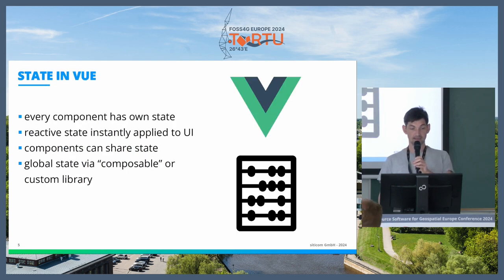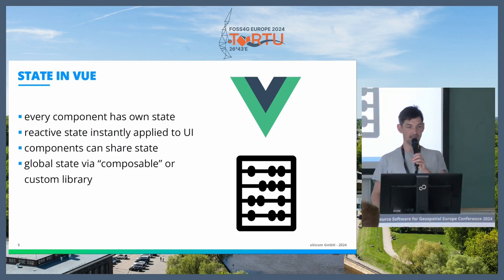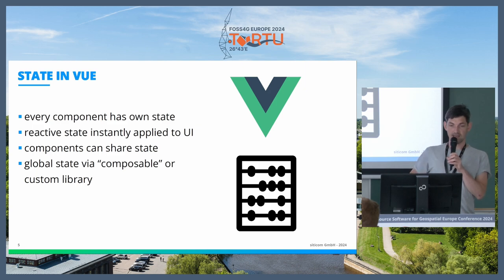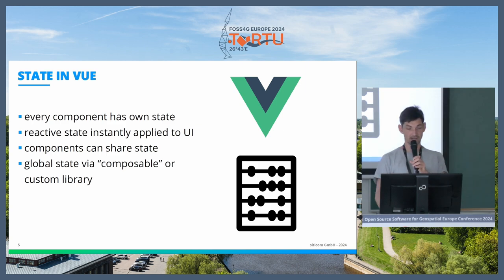How is the state stored in Vue.js? That's what I wanted to combine — both libraries have a different way of storing their state, and I wanted to find out how I can combine them. In Vue.js, every component — like a little drop-down menu or a big map — has its own state. That state is reactive, and when it changes it is directly applied to the UI. Components can also share a state, and you can have a global state via so-called composables or using a custom library.